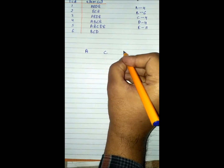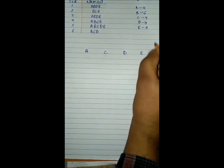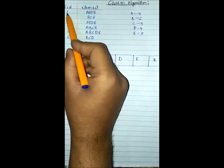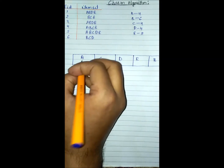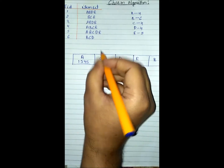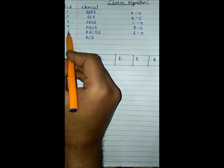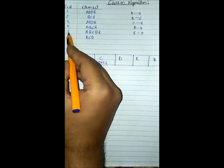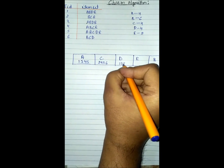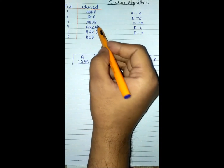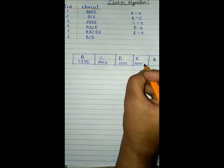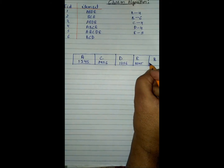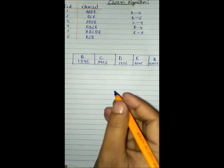Now we write the transactions for each item. A appears in transactions one, three, four, and five. C appears in two, four, five, six. D appears in one, three, five, six. E appears in one, two, three, four, five. And B appears in one, two, three, four, five, and six. Now we make pairs.